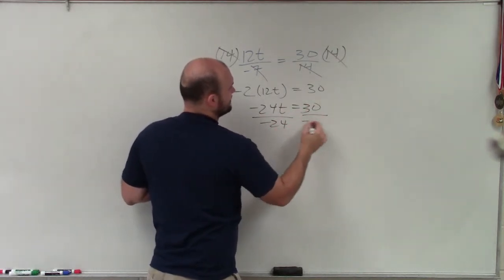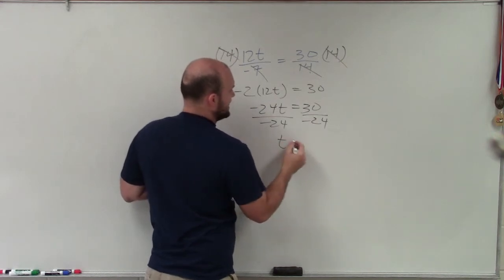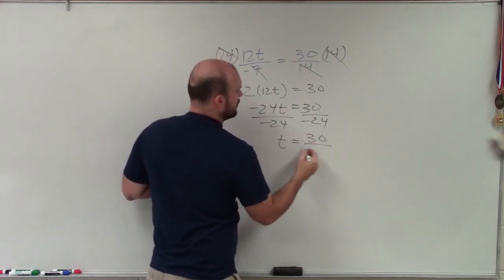Divide by negative 24. So t equals 30 over negative 24.